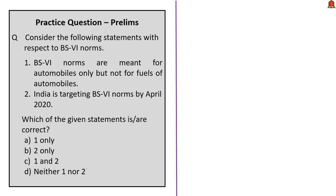Consider the following statements with respect to BS6 norms. Statement 1 says BS6 norms are meant for automobiles only and not for the fuels of automobiles — this is incorrect, as BS6 norms apply to both automobiles and fuel. Statement 2 says India is targeting to implement these norms from 1st April 2020 — this is correct. So the correct answer is option B, statement 2 only.